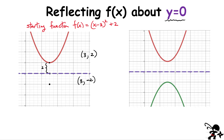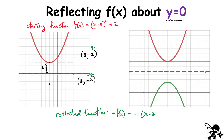How does this look for the general case? Here's the reflected function. In order to get the value of the reflected function, you start from y and simply put a negative in front of it. For the function, it simply means the reflected function is minus f of x, where f of x is the y value. Going ahead and doing that for this specific parabola, we end up getting the function x minus 3 squared minus 2, after carrying out the multiplication of the negative in front.